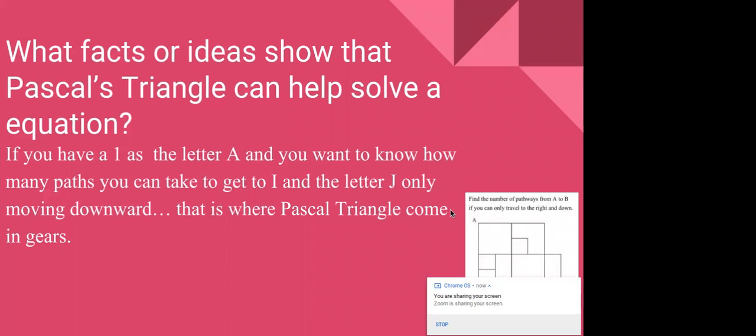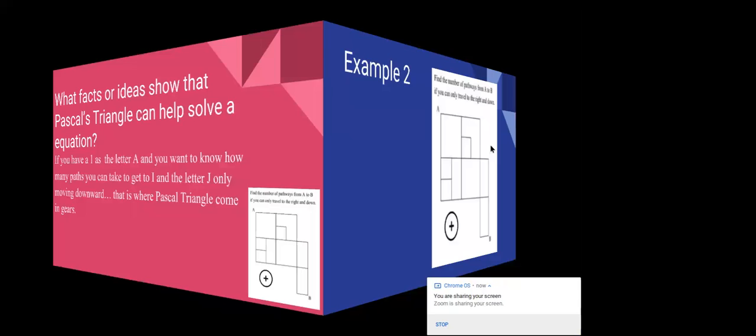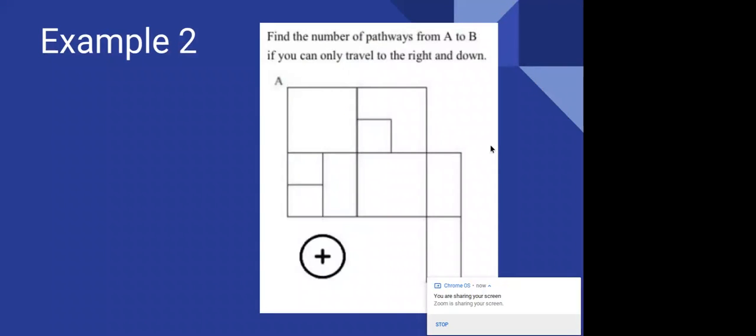What facts or ideas show that Pascal's Triangle can help you solve an equation? So say you have a different path and you're trying to get to the other letter. You start off with A and find out different paths to get to I or J by moving only downwards. Here's an example. You start off with A and you see there's only two directions that you can go to get to the end letter.